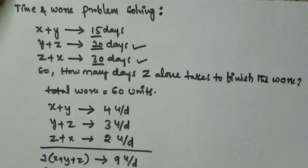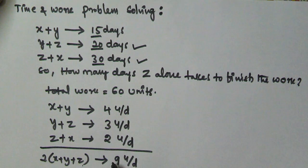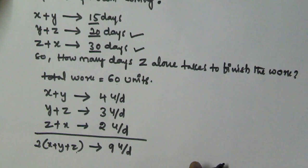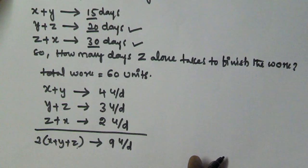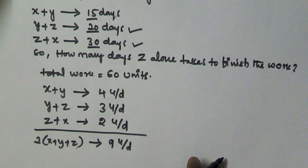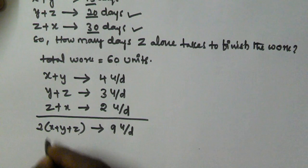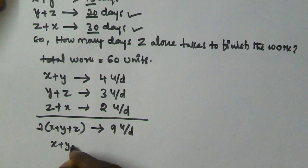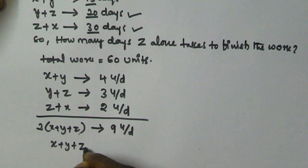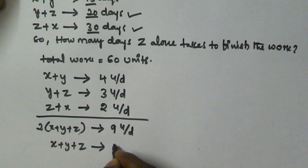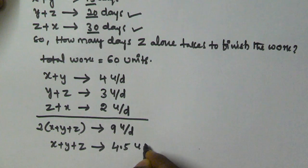So that means twice X, twice Y, and twice Z finish 9 units per day. That means X, Y, and Z — all 3 persons together — are going to finish 4.5 units per day.